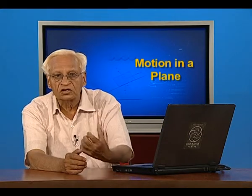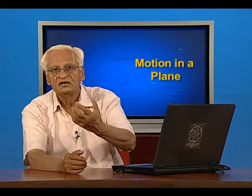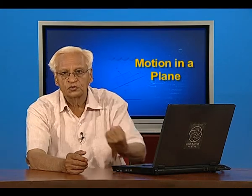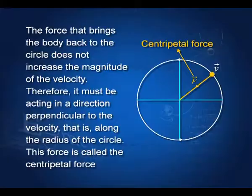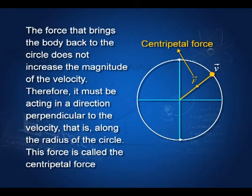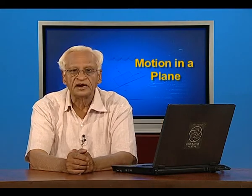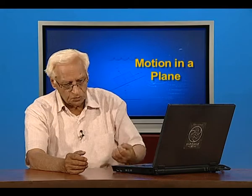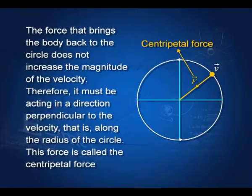As shown in the last slide, this means there is a force acting on the object moving in a circle that is always pulling it towards the center of the circle. This force is called the centripetal force. The direction of the force keeping the body on a circular path is along the radius, because it has to pull the body towards the center.